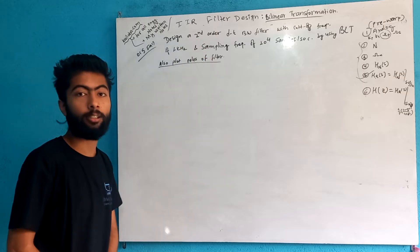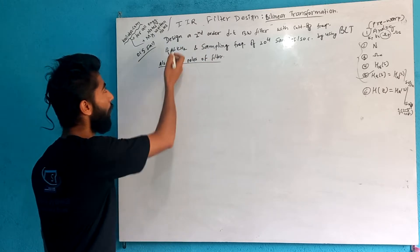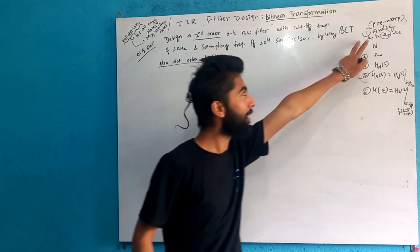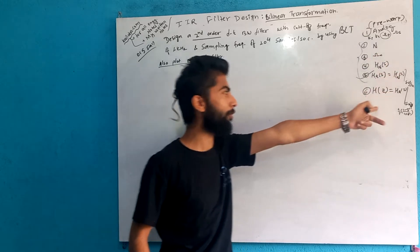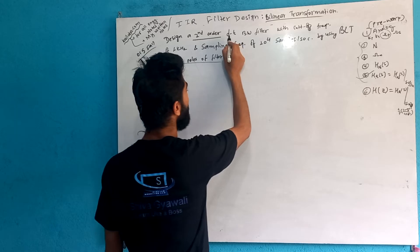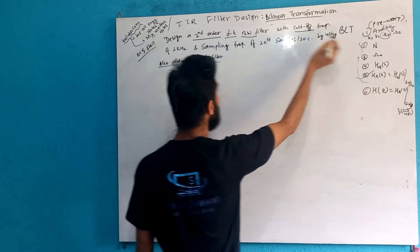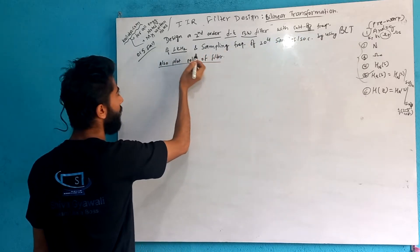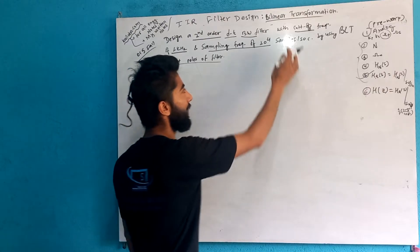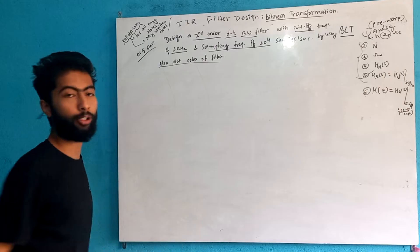This question is a different type. Design a second-order discrete-time Butterworth filter with a cut-off frequency of 1 kHz and a sampling frequency of 10 to the power 4 samples per second, using the BLT (bilinear transformation). Also plot the poles of the filter.